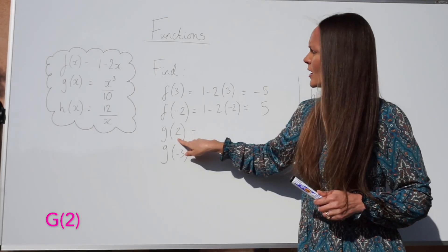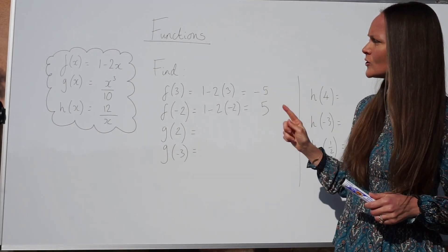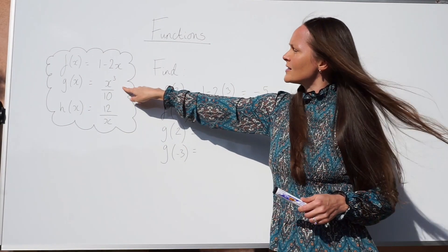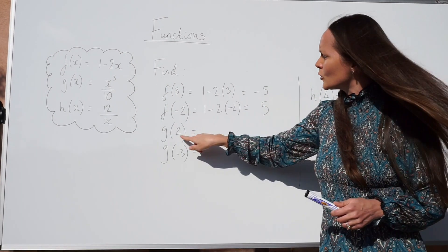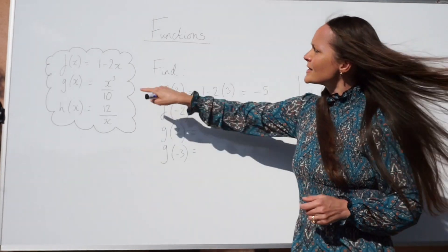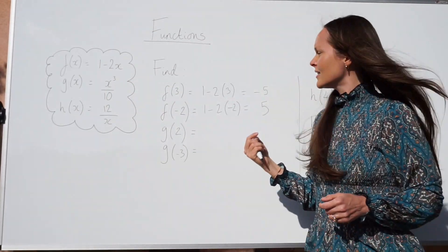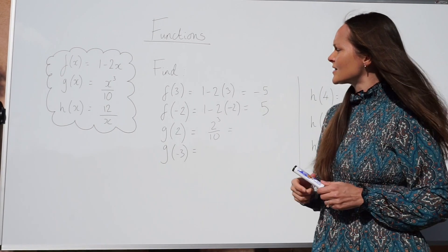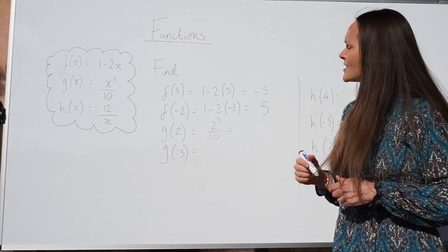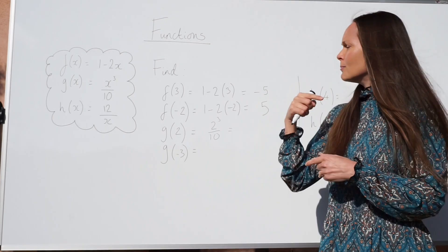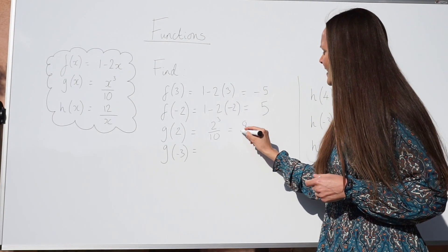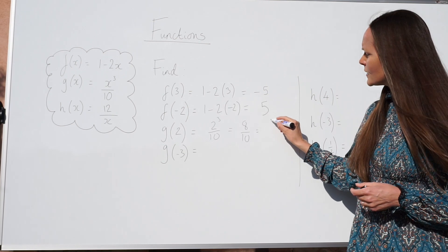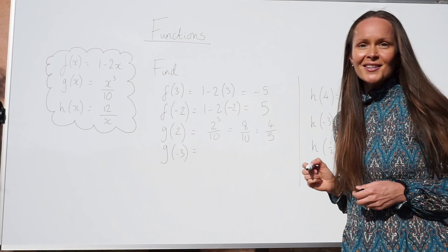Next, we have g of 2. The letter changes to a g, so now we're using the function g of x. It's the same idea — we're just going to use this function and change the letter x to positive 2. So instead of writing x cubed over 10, we write 2 cubed over 10. 2 cubed is 8, and 8 over 10 is a fraction we can simplify because they have a common factor of 2. Dividing both by 2 gives 4 fifths.